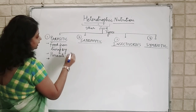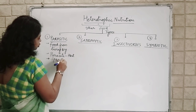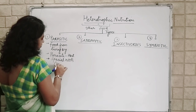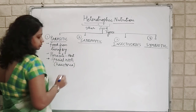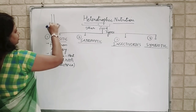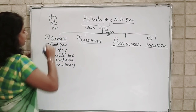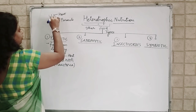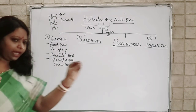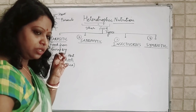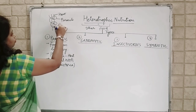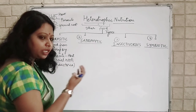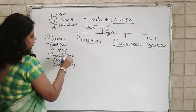How does the Parasite get nutrition? They develop special types of roots known as Haustoria. If this is a host plant and this is a parasite growing over it, the Parasite will produce special root-like structures to draw the nutrition. By these special roots, they absorb or suck the nutrition from the plant.